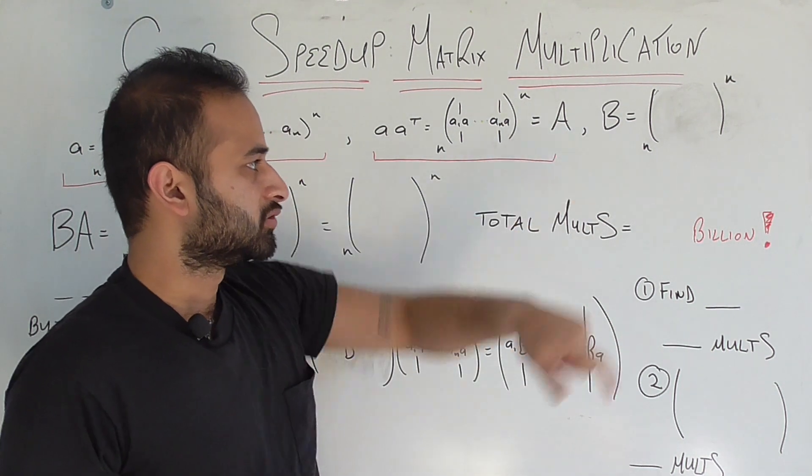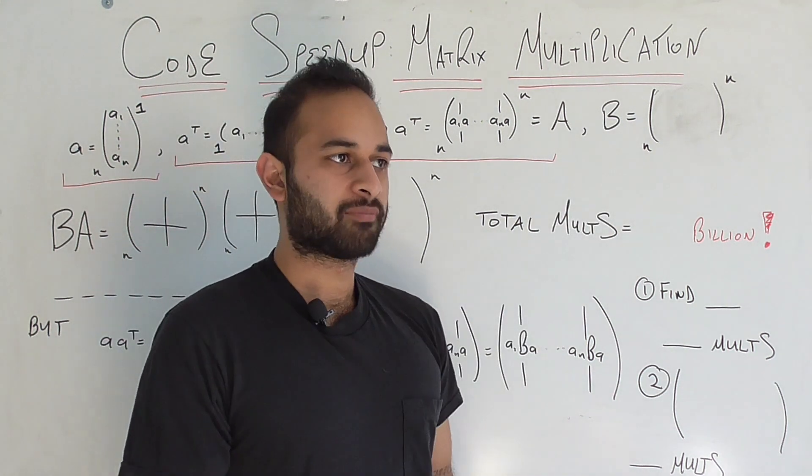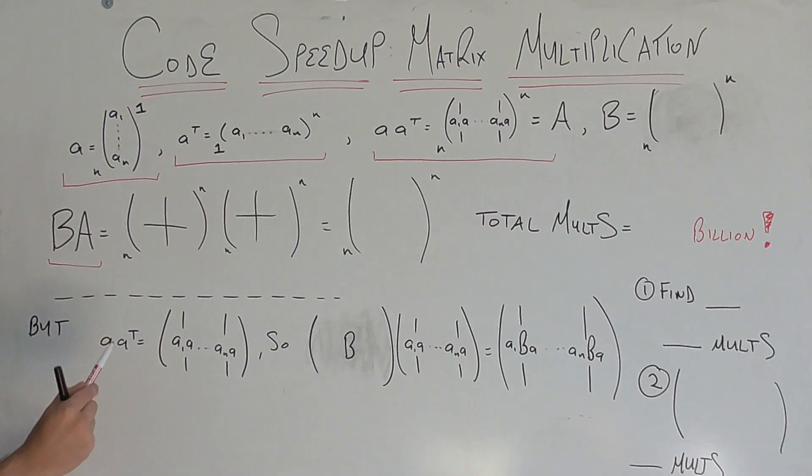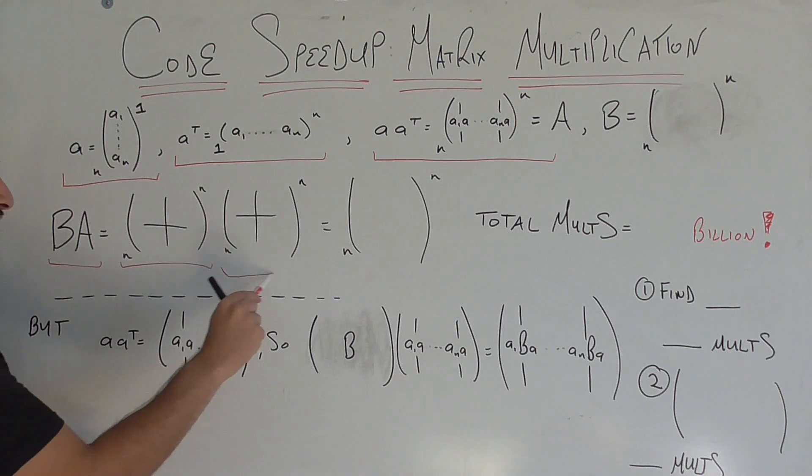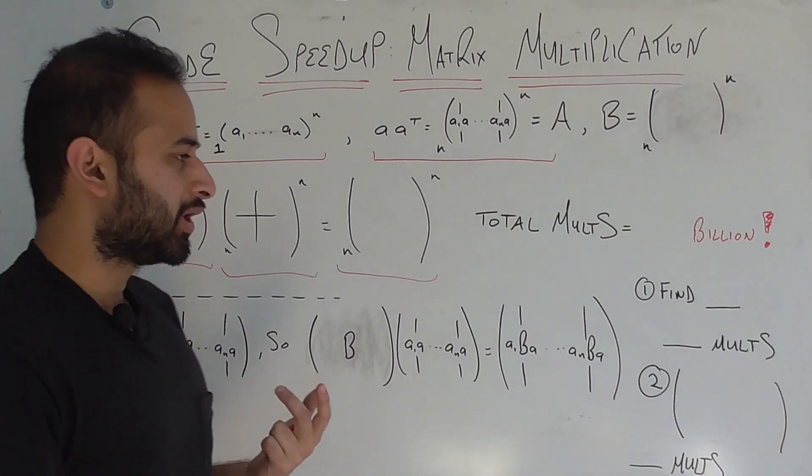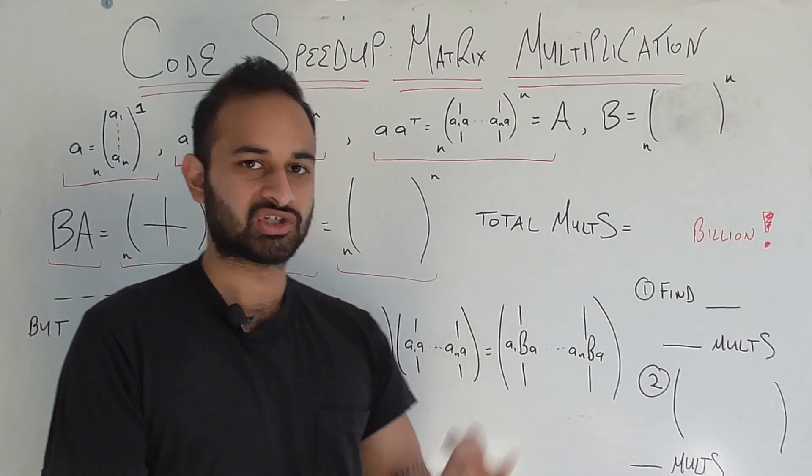There was a separate matrix B. Don't worry too much about what it was. It was just a different n by n matrix. And part of my goal was to multiply, find this product B times A. So here's B. Here's A. They're both n by n. And the result should be n by n. So I was thinking about why is it taking so long, and I thought about what's the total number of multiplications that are happening.